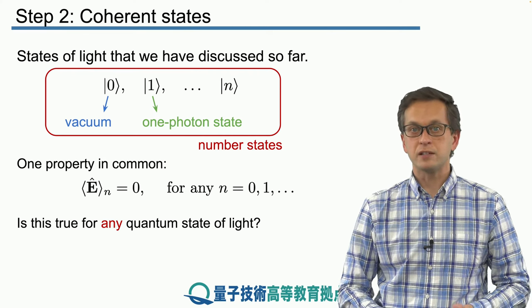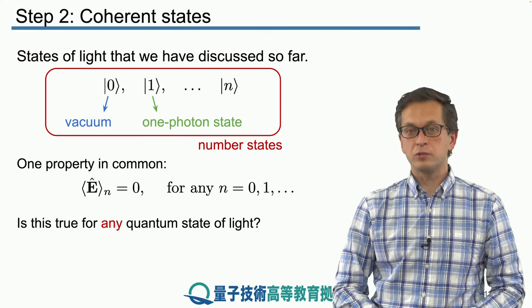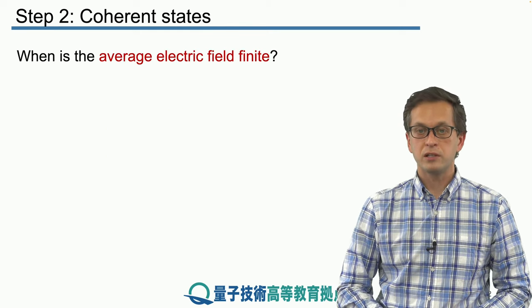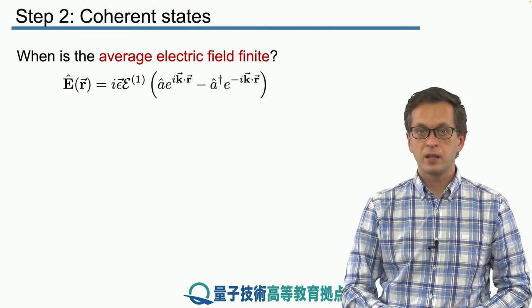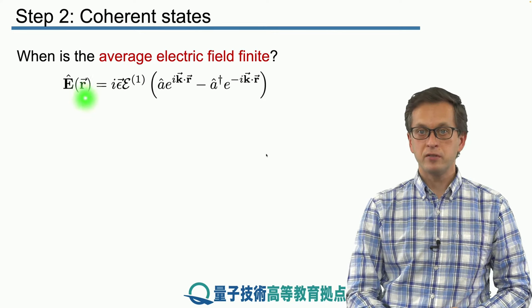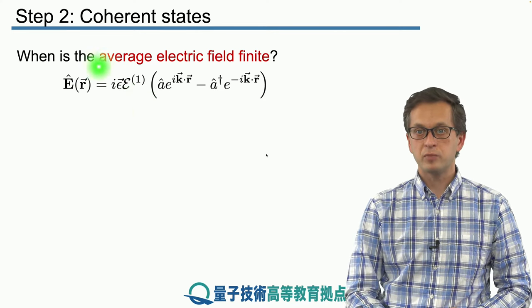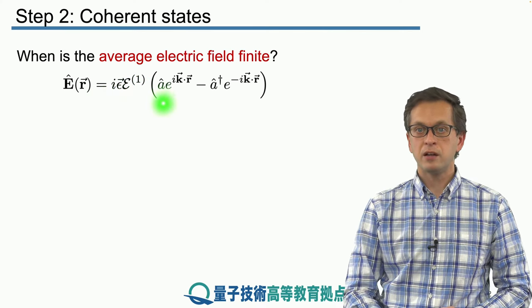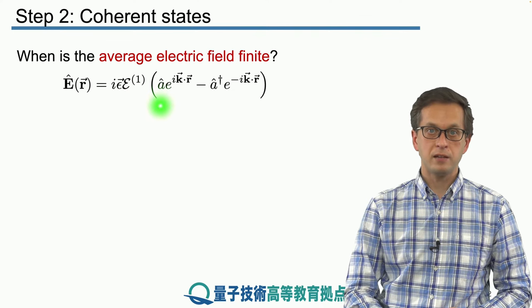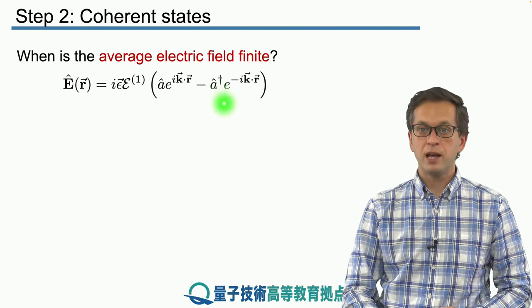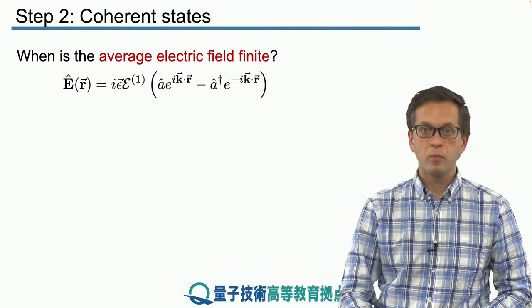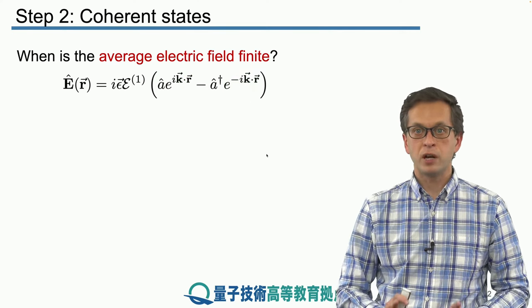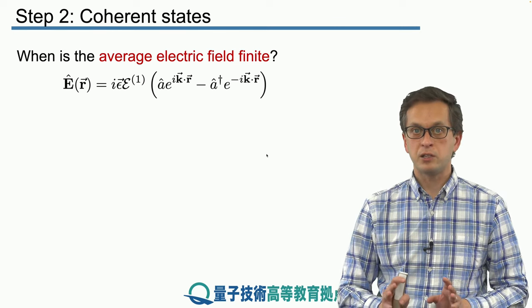And of course the answer is no. So to see first why number states give us the average 0, let's consider the following case. This is our operator for the electric field. It's got this multiplication factor in front along with the polarization vector. And here it depends on the hat a, the annihilation operator for the mode, and the creation operator for the mode, multiplied by their respective exponentials. Really now what's important are just the creation and annihilation operators.